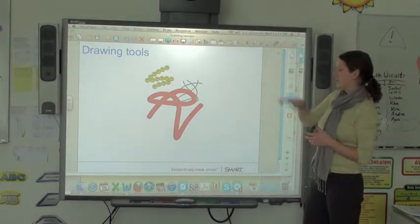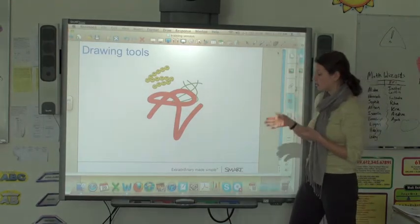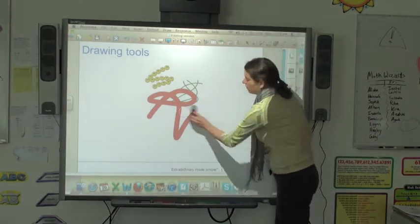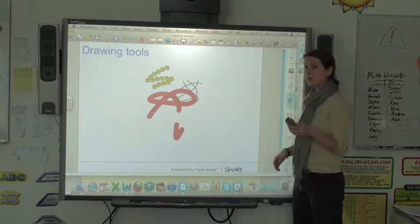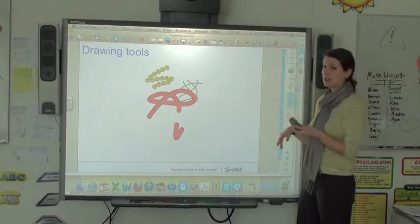Another helpful hint: if you want to erase a big area of your screen without going through and erasing each piece, you can move your eraser in a circular motion and then tap in the middle and it'll erase the whole thing.